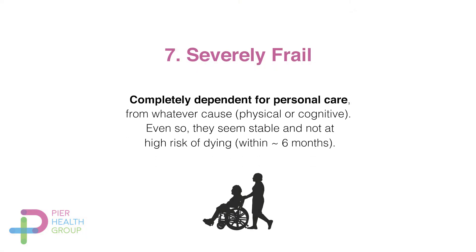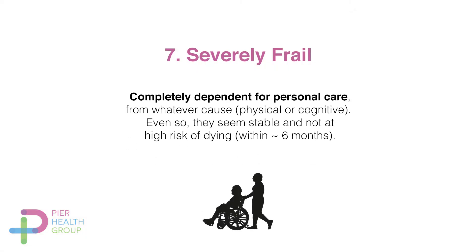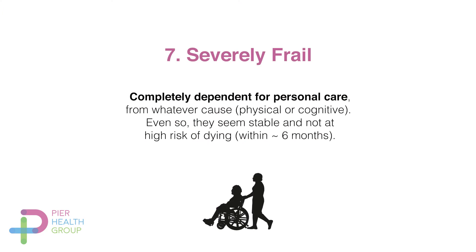Number seven indicates residents who are completely dependent for personal care. Think about which of your residents you help with all aspects of their personal care — whether due to physical disabilities or cognition. Bearing in mind that these residents may seem very stable and may not be entering the last six months of their lives.